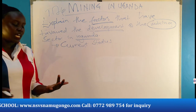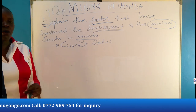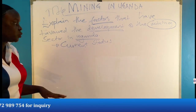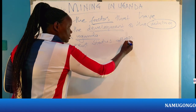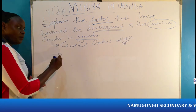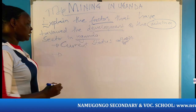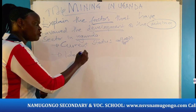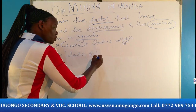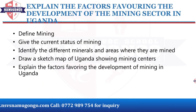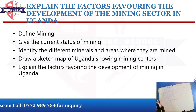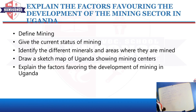Give at least six points for the current status — oil as a new mineral, most companies owned by foreigners, use of rudimentary tools, etc. Then identify the different minerals and the towns where they are mined. After that, show the examiner the sketch map of Uganda showing the minerals mined. This all acts as the introduction, showing the examiner you are well equipped with the topic before you go to the actual question.